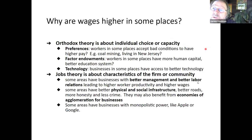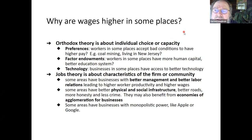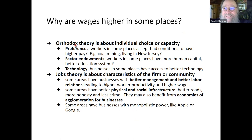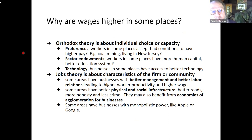The orthodox theory is about individual choice, capacity, preferences, factor endowments, and technology. Remember these three things — if you get nothing else out of this class, these three things are the basis of the entire neoclassical orthodox economic system. The jobs theory is about the characteristics of firms or community: better management, better labor relations, physical and social infrastructure, economies of agglomeration, monopolistic power. The orthodox theory is what you need to know going forward academically, since most economists you'll ever encounter are orthodox neoclassicists. But if you want to understand the world, think about the jobs theory.